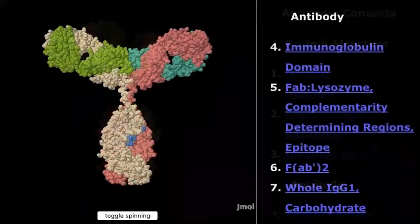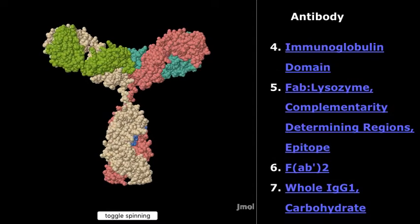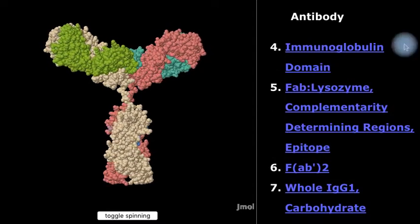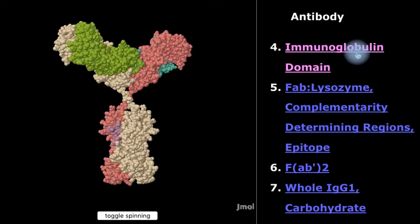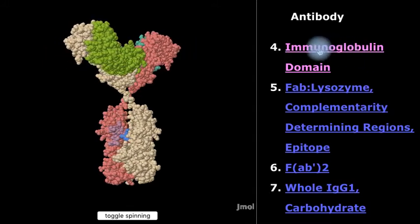The antibody molecule is made up of 12 building blocks called immunoglobulin domains. They are similar to each other in some ways, but have some crucial differences as well.